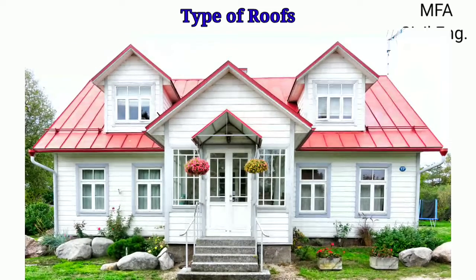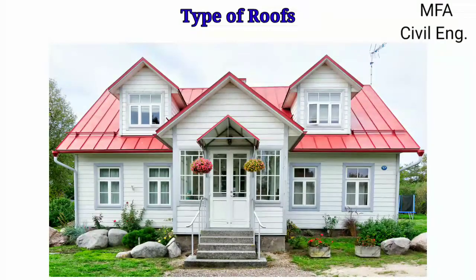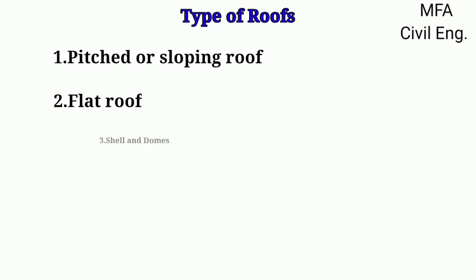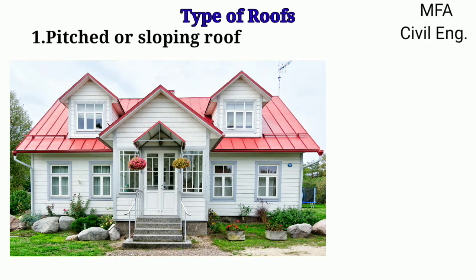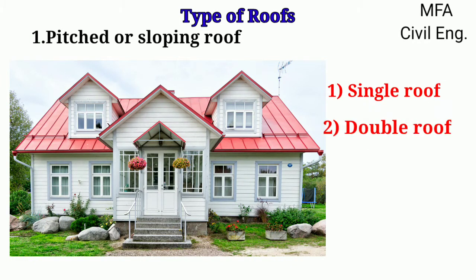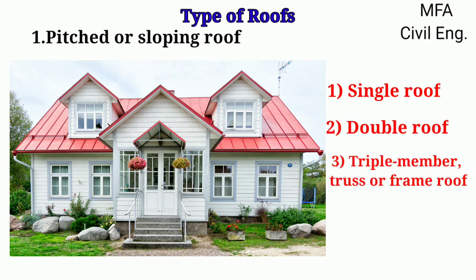Roofs are of three types: pitched or sloping roof, flat roof, and shell and domes. Pitched roofs are classified into three main categories: single roof, double roof, and triple-membered truss or frame roof.